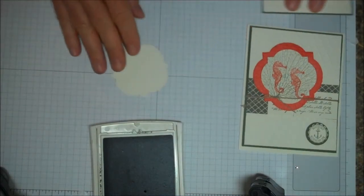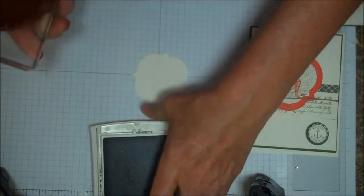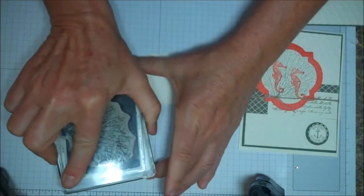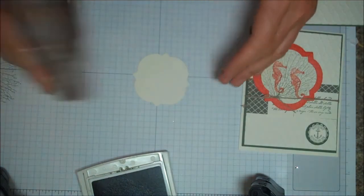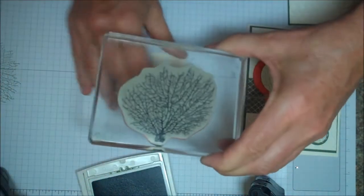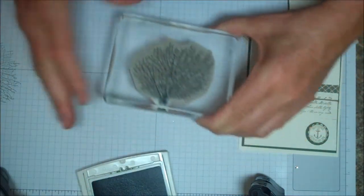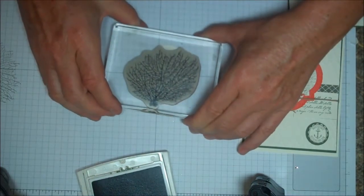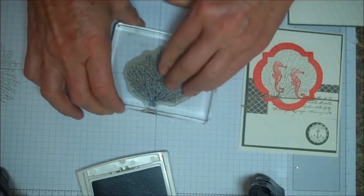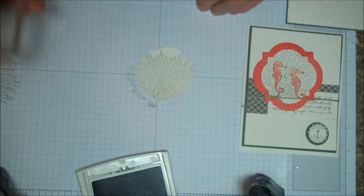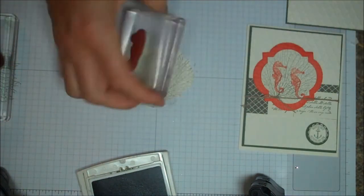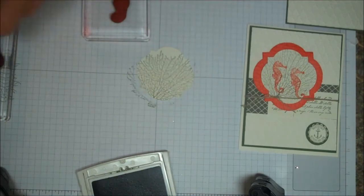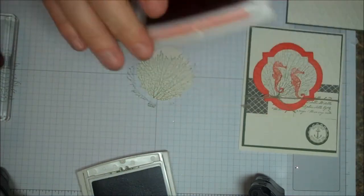So, let's stamp our fan. Now, what I'm going to do with the fan is, I'm going to ink it up, and then I'm going to stamp off. Then, I'm going to stamp on here. The reason why I stamp it off so that the color is not so intense, and my little cute little seahorses will show up. And that's going to be done in Calypso Coral.